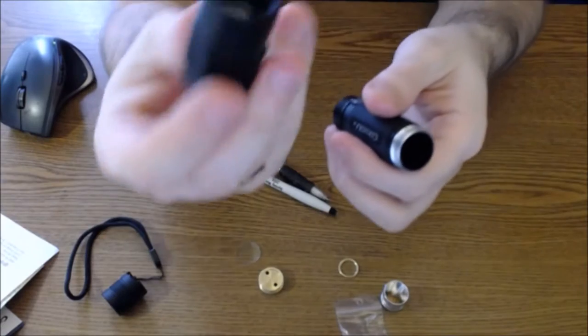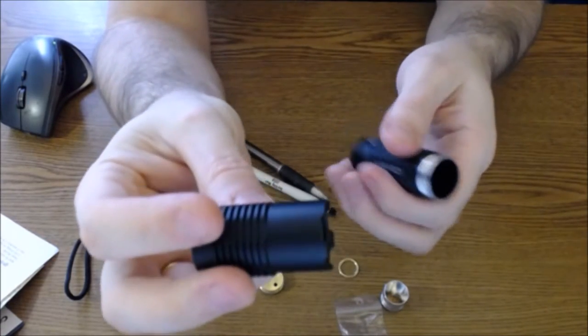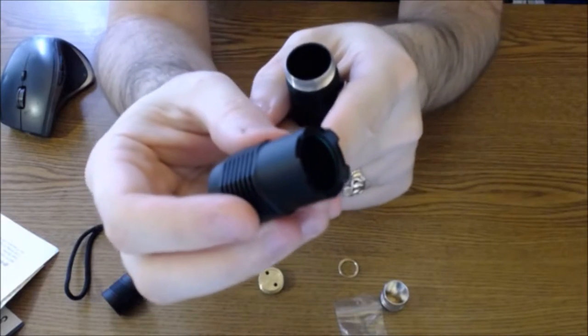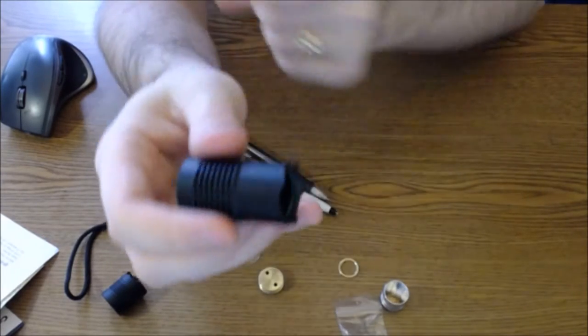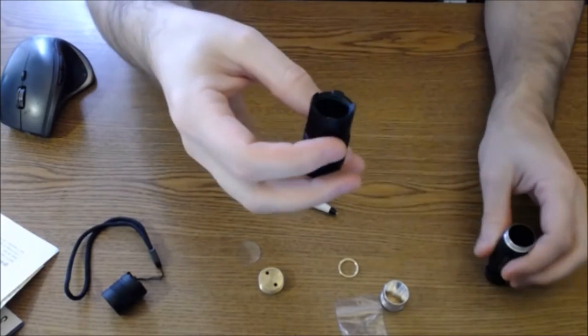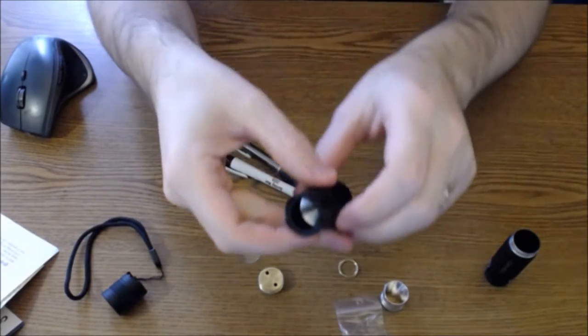And it's got this nice crenellated head. It's not an overly aggressive crenellation, but it is definitely there. So it makes a nice striker if anybody comes at you or something like that, or for emergency situations, you know, if you need to break a windshield or something.